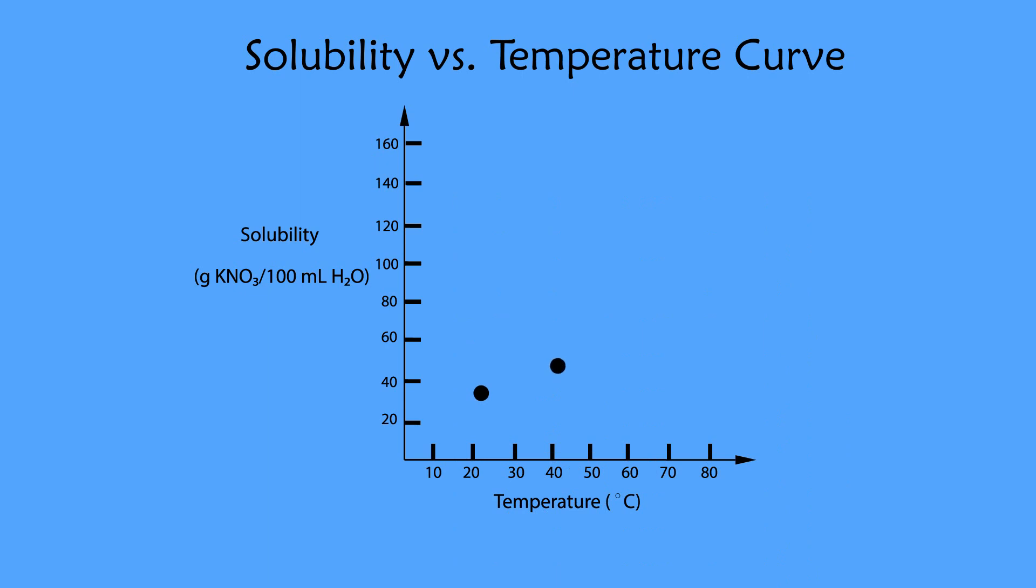Next, plot your data and draw the solubility curve of potassium nitrate versus temperature. With this plot, we know the solubility of potassium nitrate in water at different temperatures.